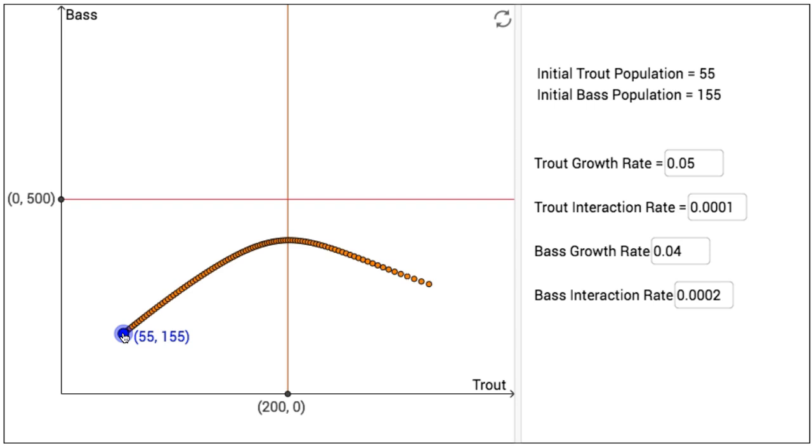Back to the right side of the interactive figure, there is also a trout growth rate of 0.05, a trout interaction rate of 0.0001, a bass growth rate of 0.04, and a bass interaction rate of 0.0002. Now, what do those things mean? What is meant by a growth rate, and what is meant by an interaction rate?